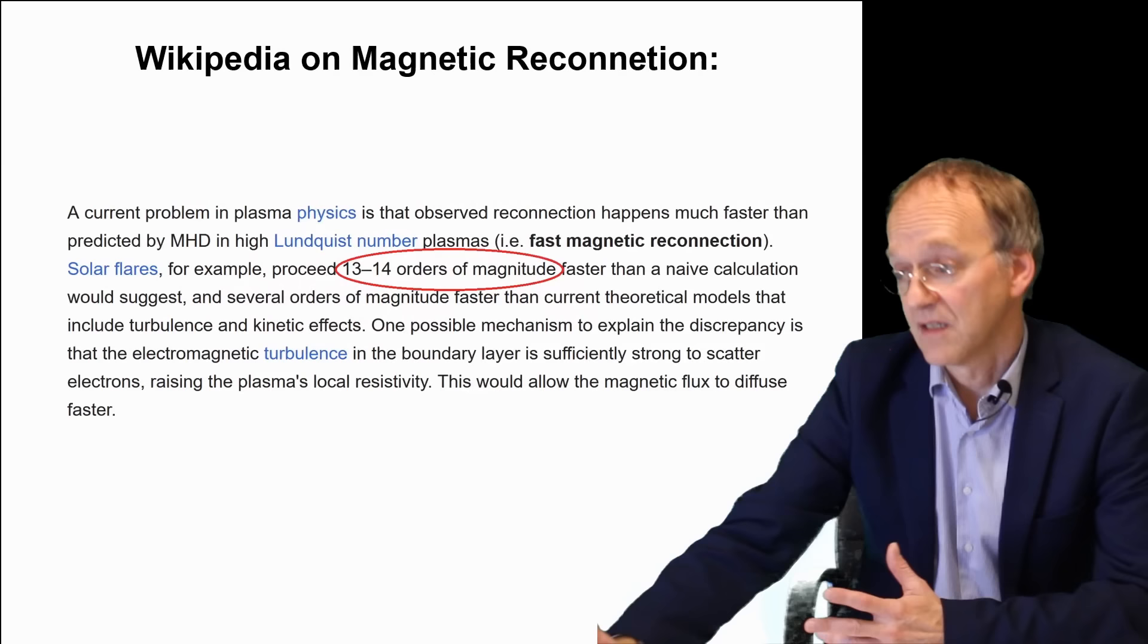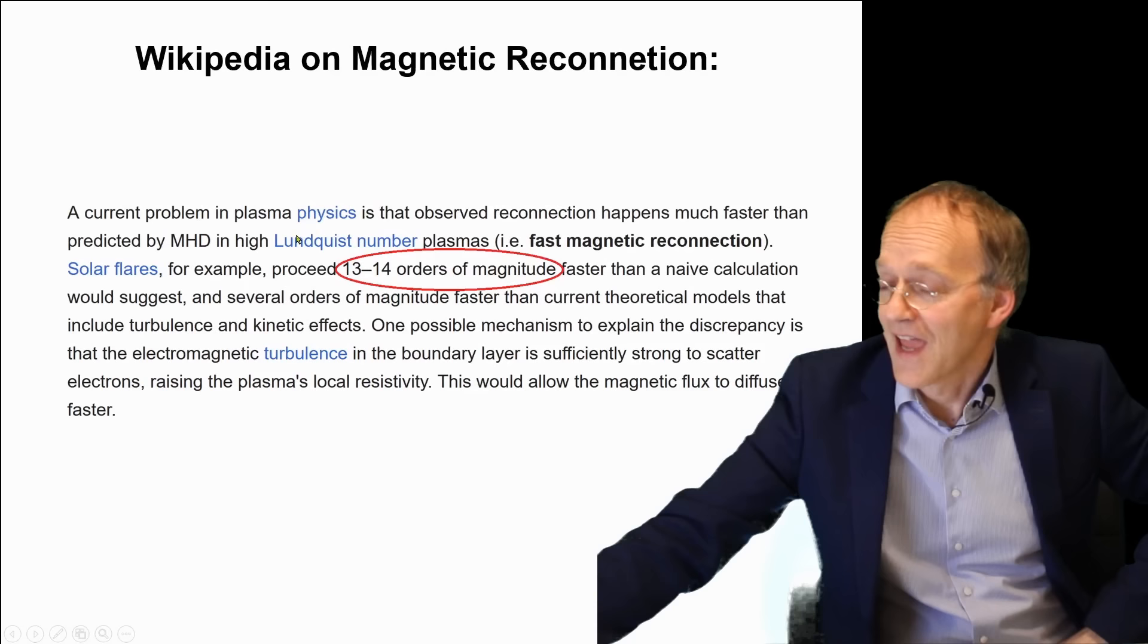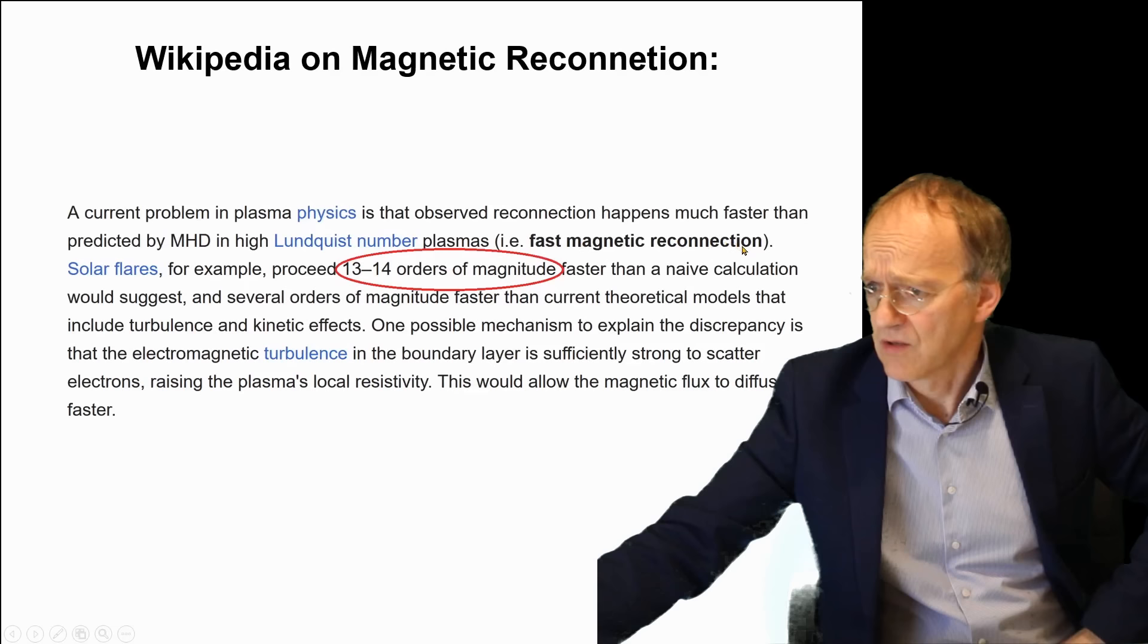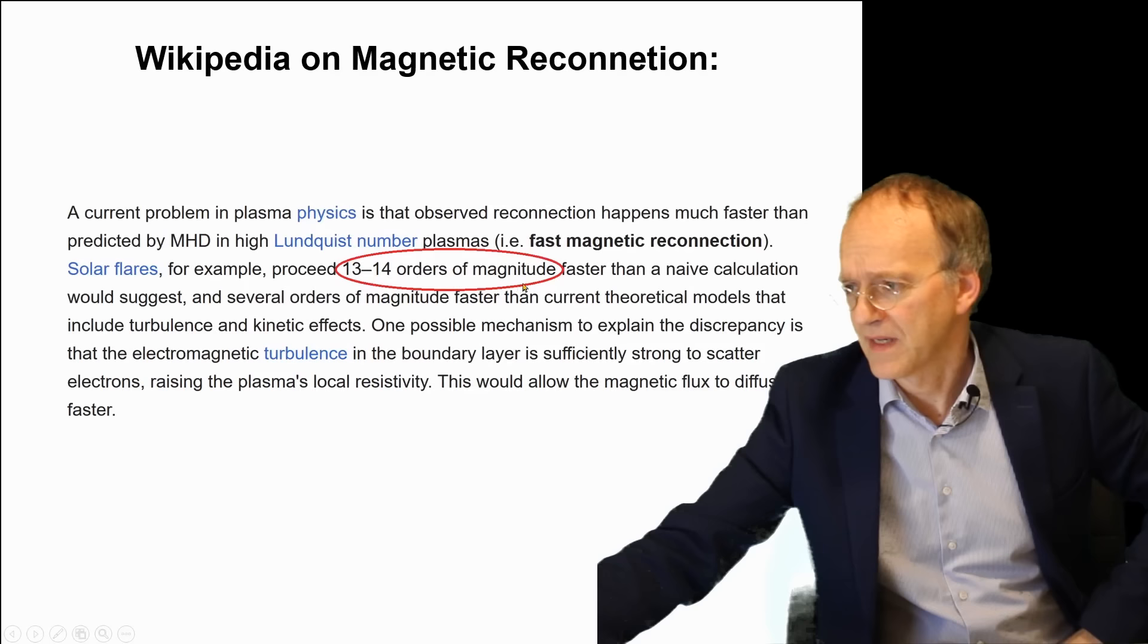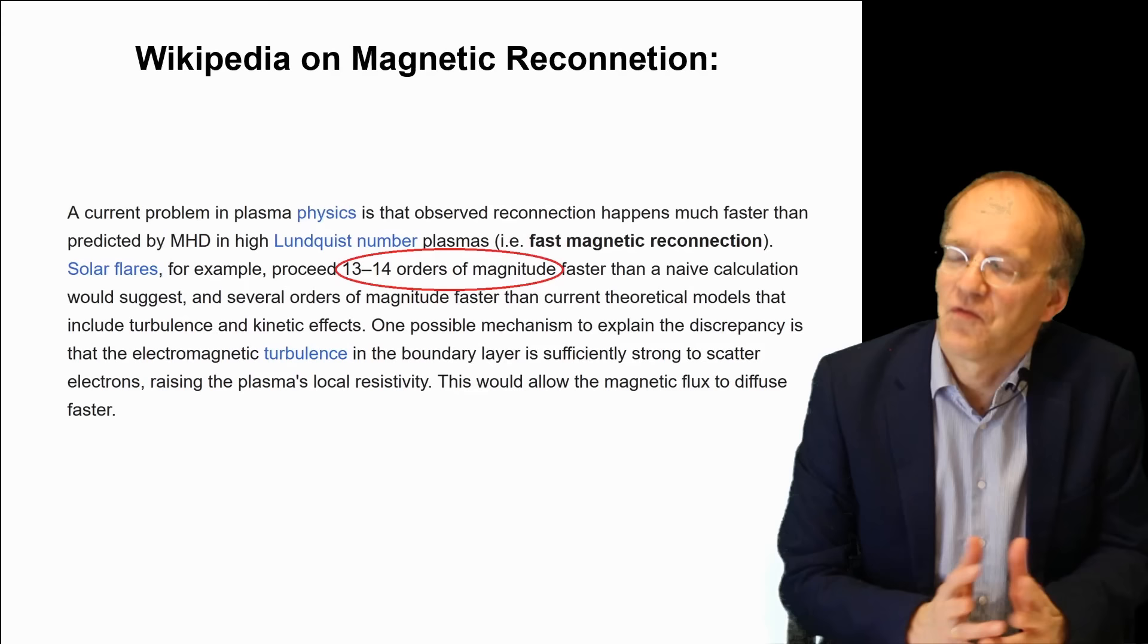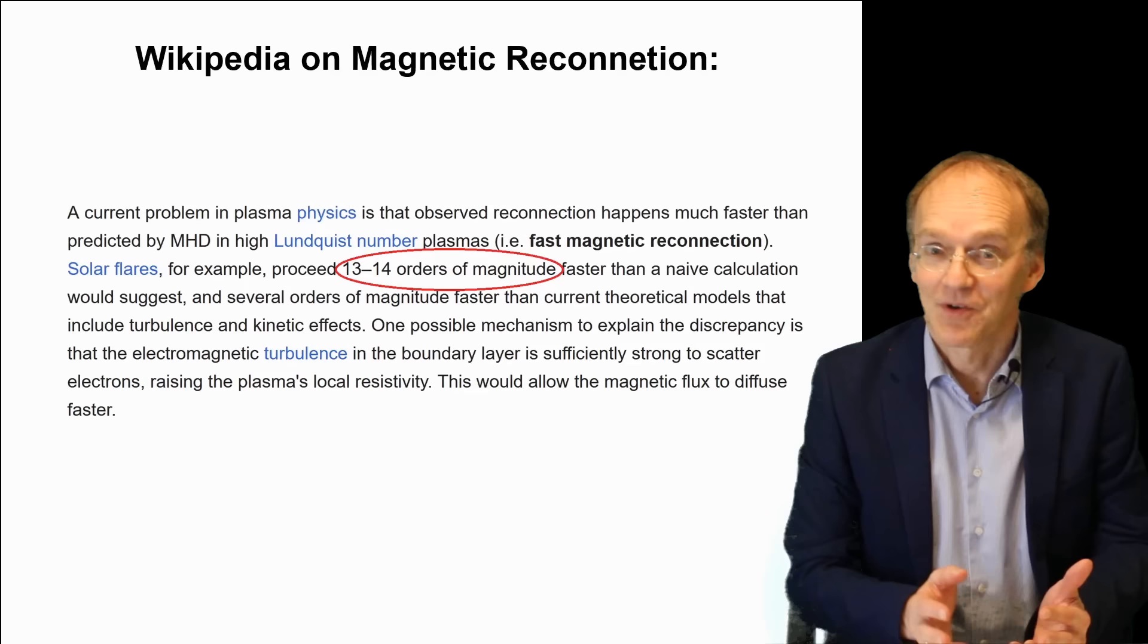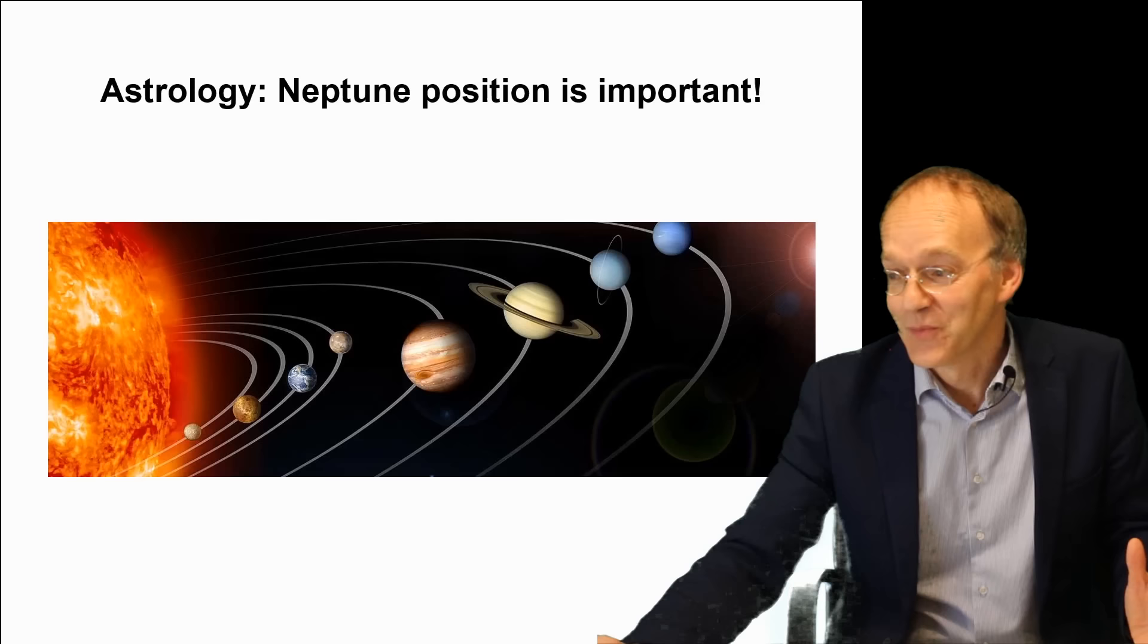And if you look up the literature and Wikipedia – Wikipedia is always ready to rehash mainstream science – one of the theories is magnetic reconnection, and they say a current problem in plasma physics is fast magnetic reconnection. Solar flares, for example, proceed 13 to 14 orders of magnitude faster than a naive calculation would suggest. The first time I read this I thought, okay, a factor of 13 or 14, that's not a little, that's quite a bit. Then I realized – oh, it's 13 orders of magnitude! That's incredible!